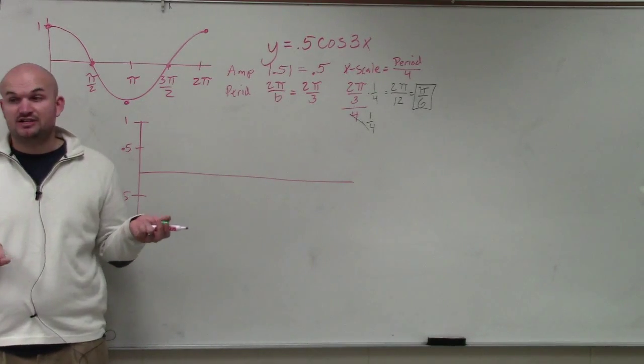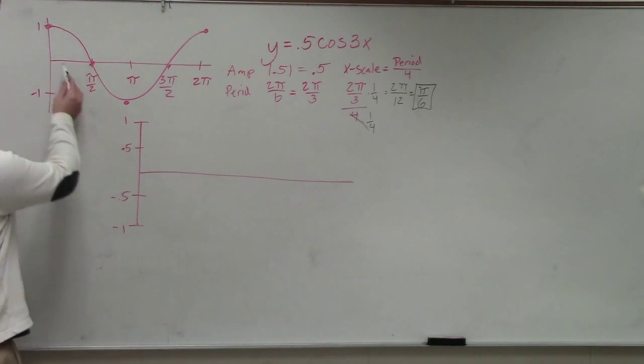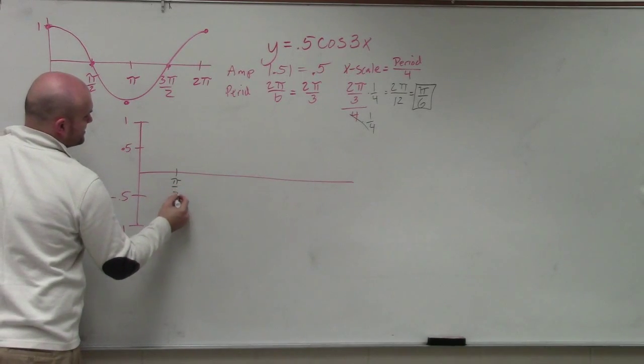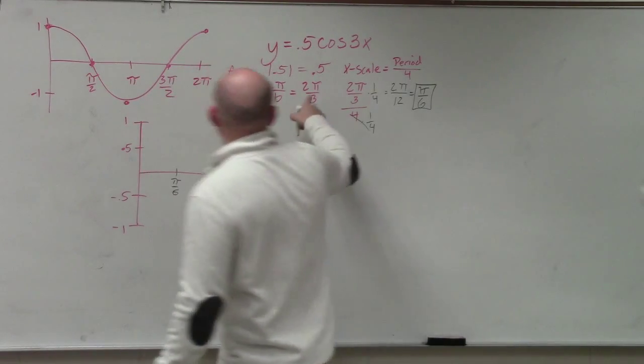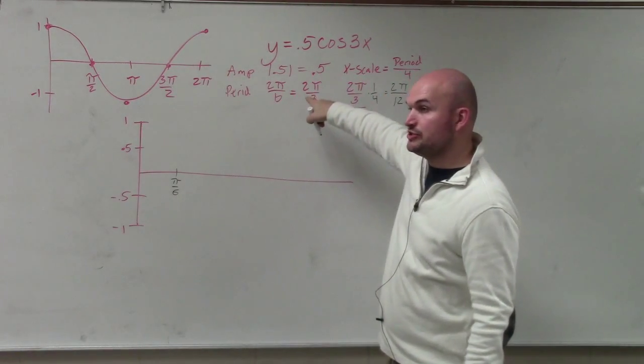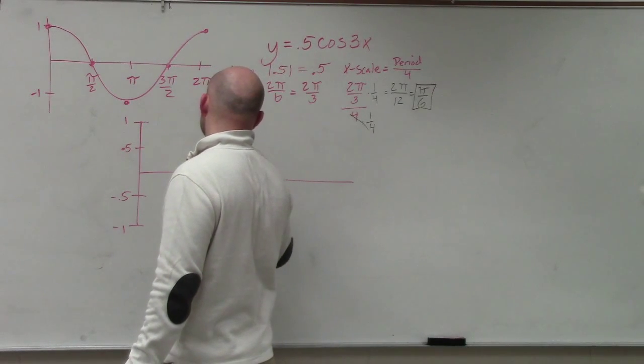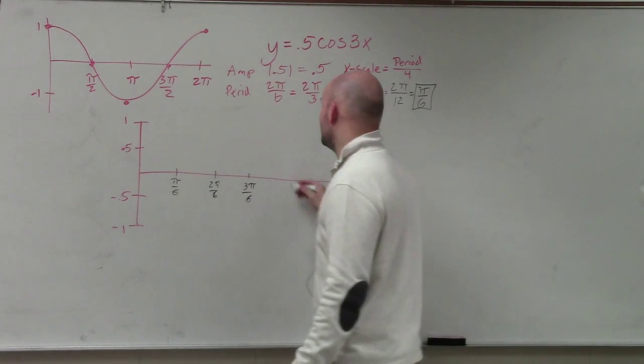I divided a fraction by a number and got π/6. So instead of scales going by π/2, I'm using π/6. I asked you to do two periods. We know a period is 2π/3, so I'm going π/6, 2π/6, 3π/6. Until you get good with fractions, you can just count them like this.